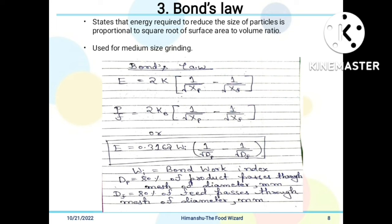Bond's law can also be written in terms of the work index function as: E = 0.3162 × W_i × (1/√d_P − 1/√d_F), where W_i is Bond's work index. The work index is defined as the gross energy requirement in kWh per ton of feed needed to reduce a very large feed to such a size that 80% of the product passes through a 100 micron screen. Here, d_P is the size at which 80% of the product passes through a mesh, and d_F is the size at which 80% of the feed passes through a mesh, both in millimeters.